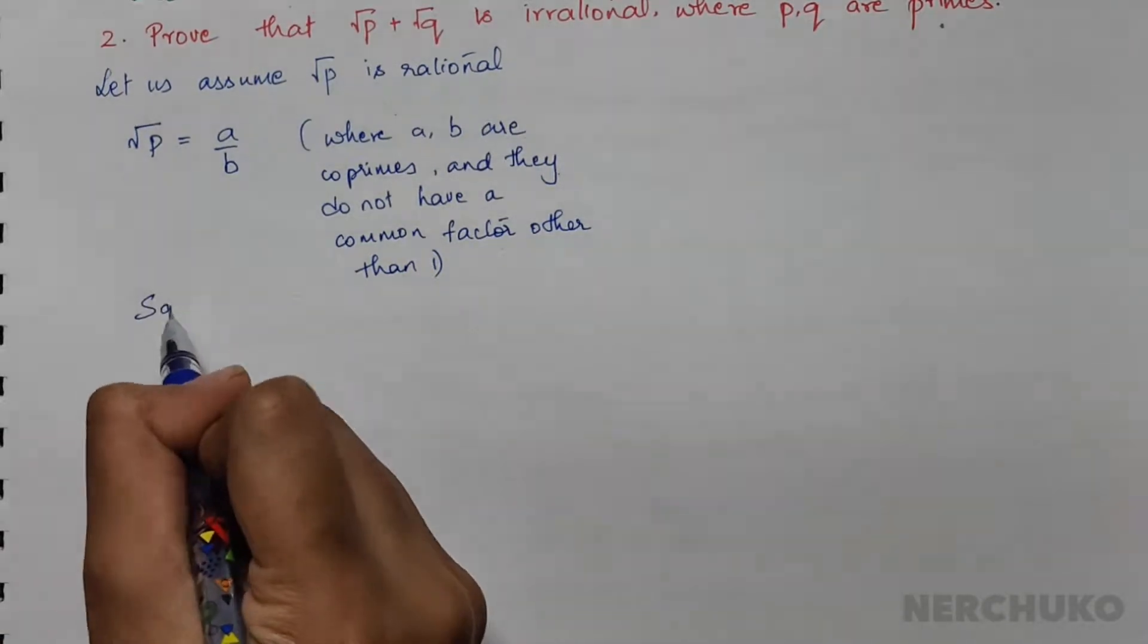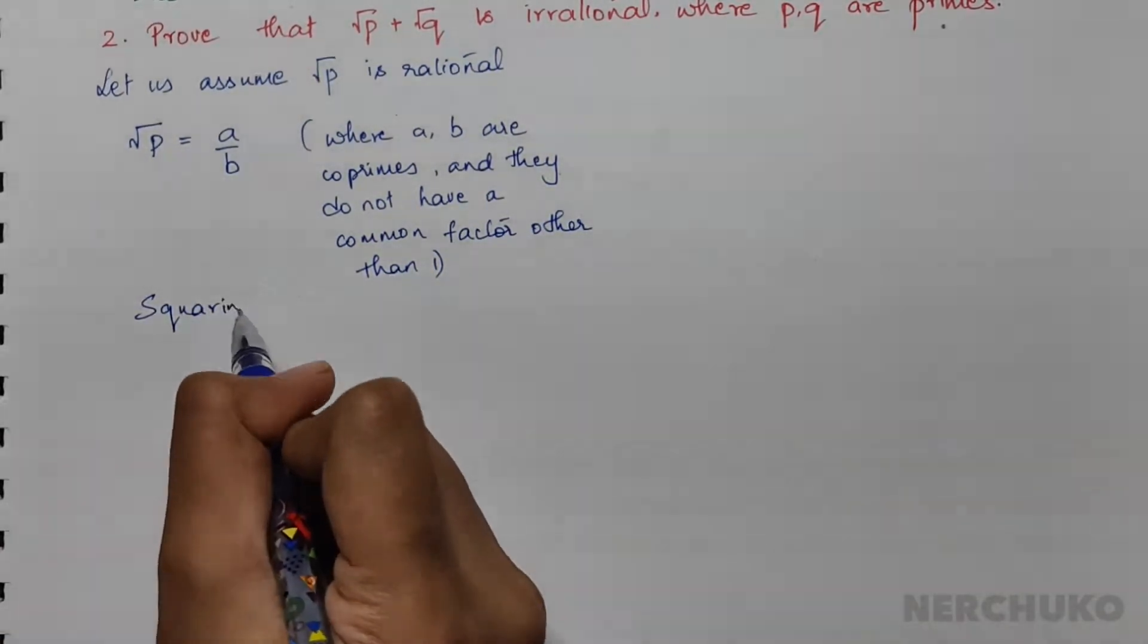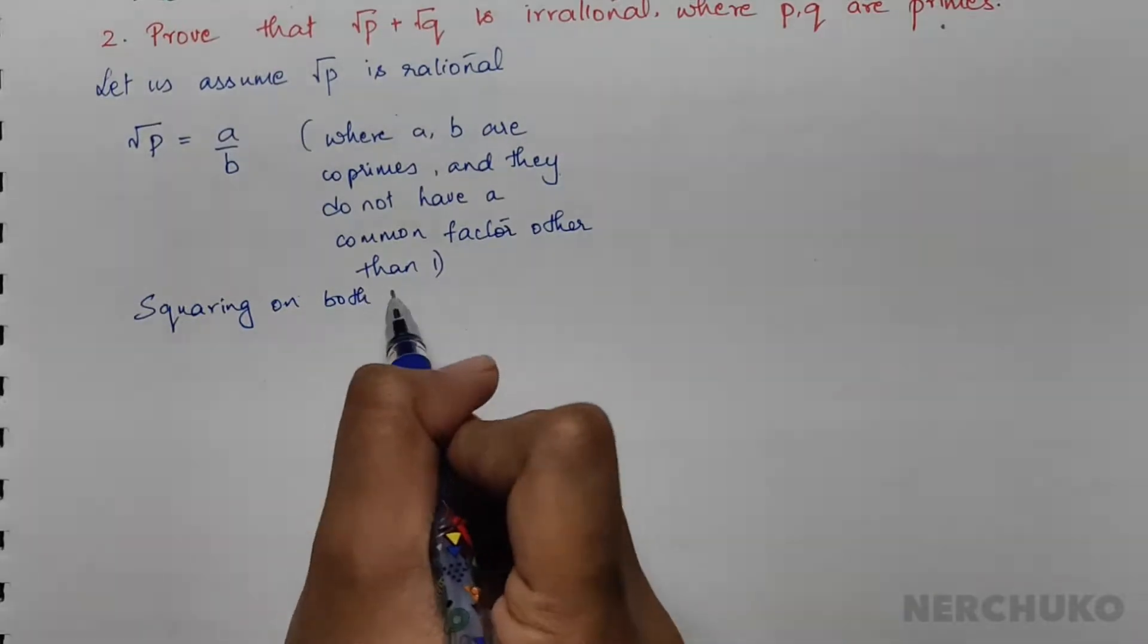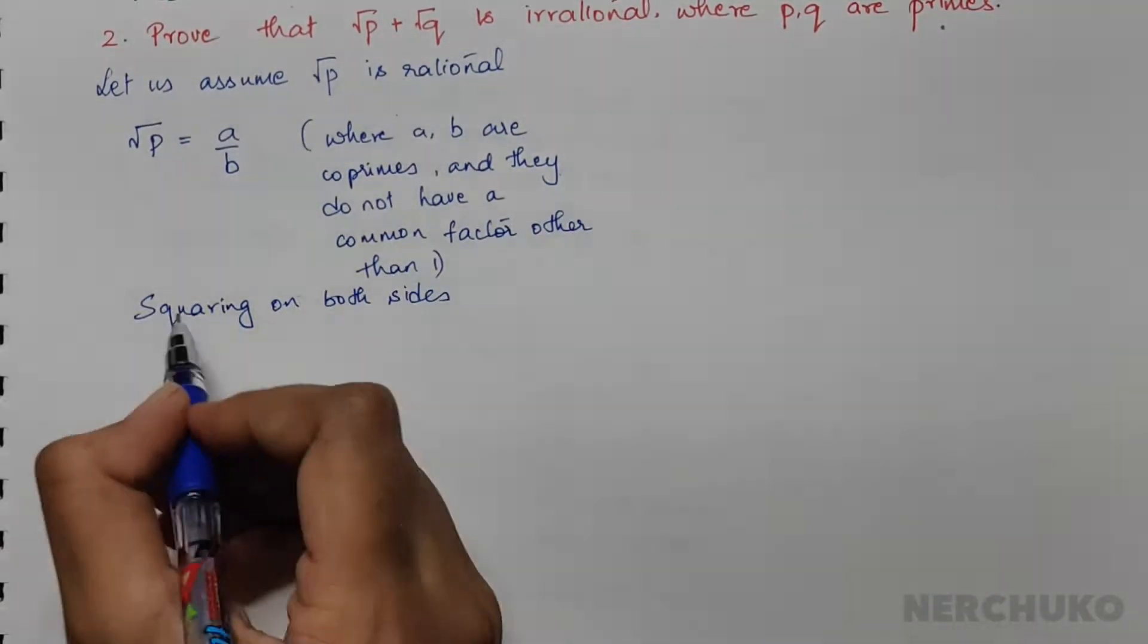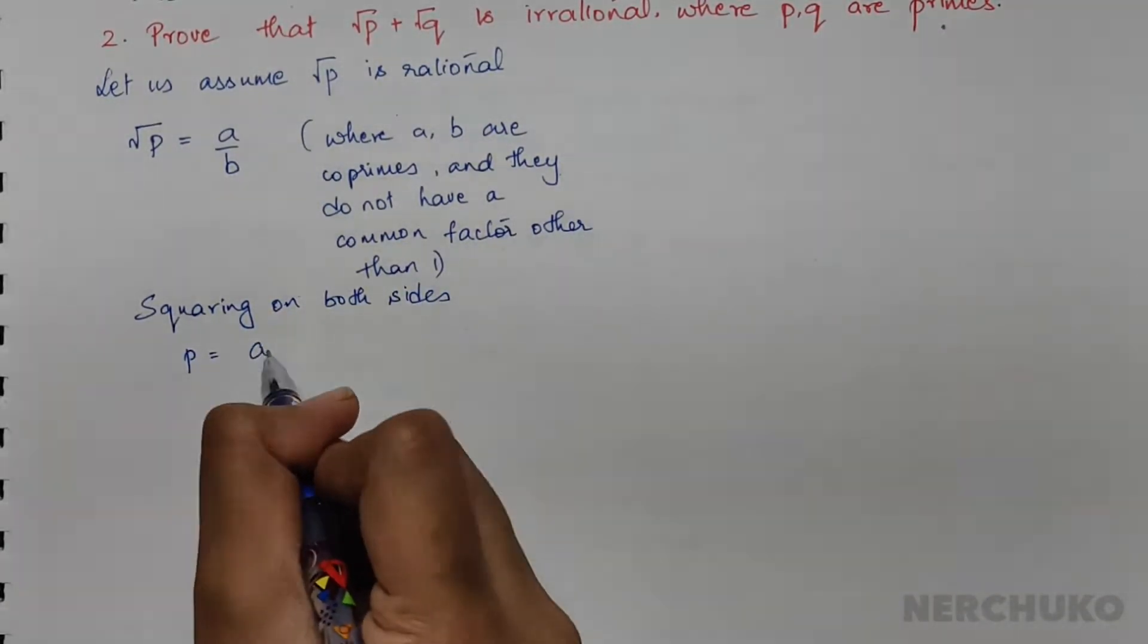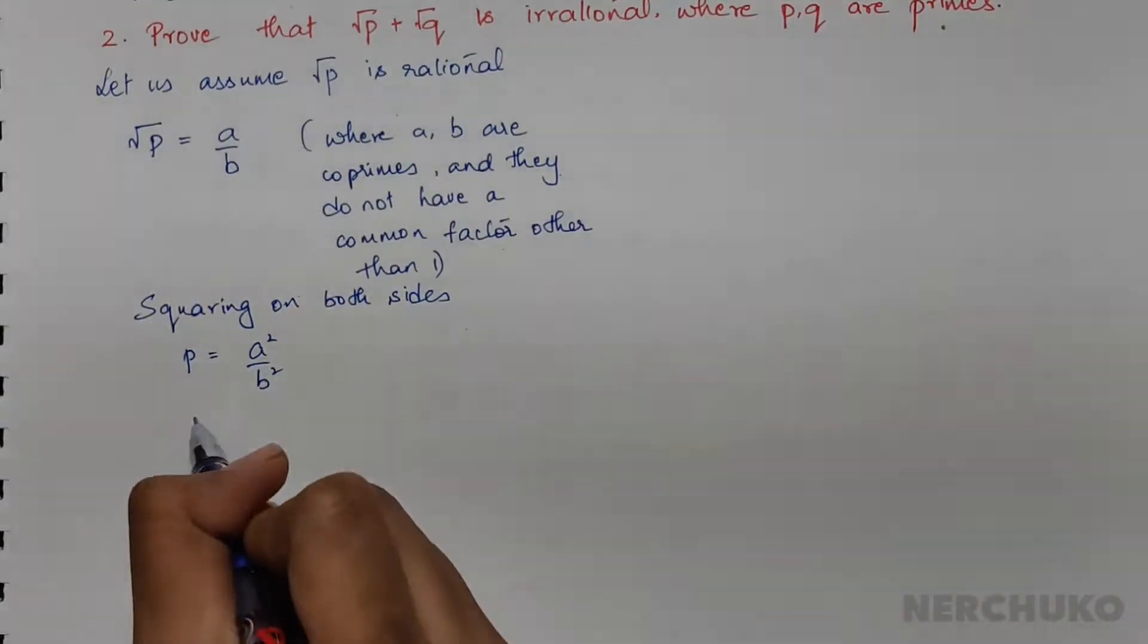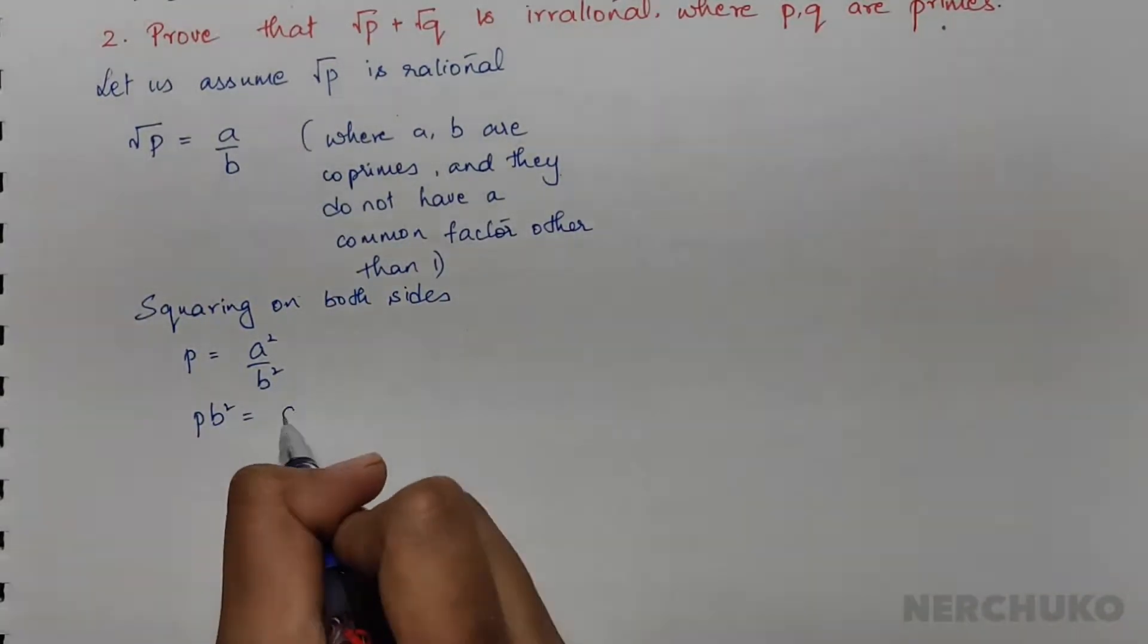If I am squaring on both sides, I would have p equal to a squared by b squared, and pb squared equal to a squared.